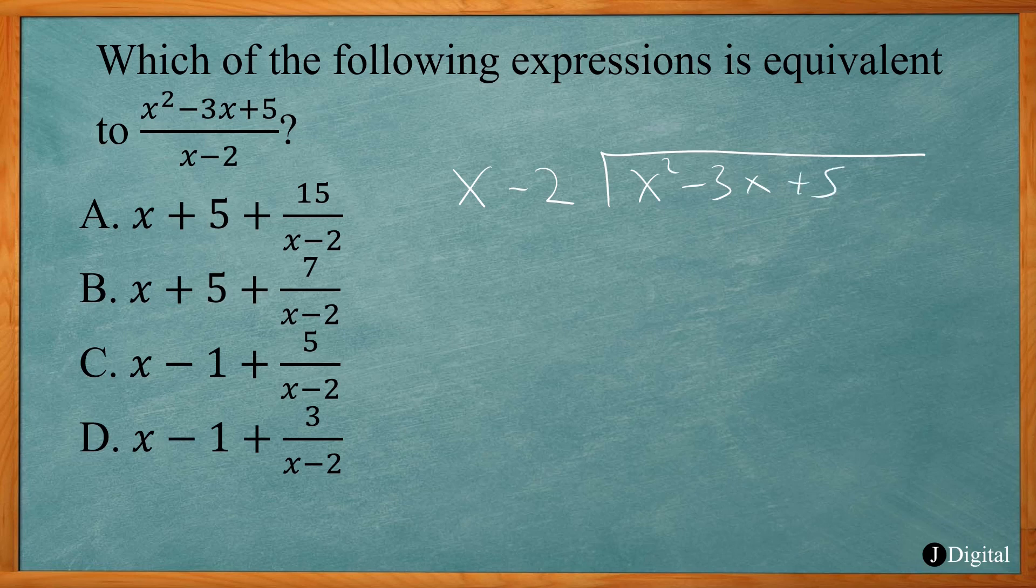Alright, so first you want to figure out what times x will give you x squared, so I need to have an x for that. I take x times x to give me x squared, then x times negative 2 to give me negative 2x.